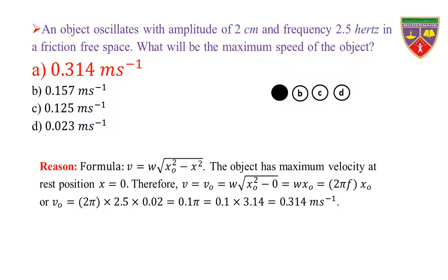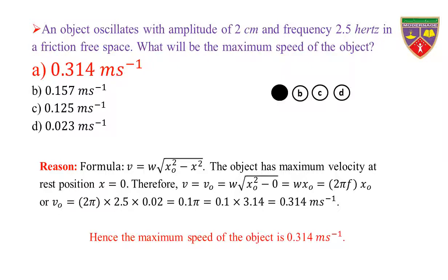Reason: formula V = ω × √(x₀² − x²), where x₀ is the amplitude and x is the displacement. The object has maximum velocity at the rest position because displacement is 0. Therefore, V_max = ω·x₀ = 2πf·x₀. V_max = 2π × 2.5 × 0.02 = 0.1π = 0.1 × 3.14 = 0.314 m/s. Hence, the maximum speed of the object is 0.314 m/s.